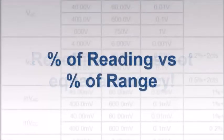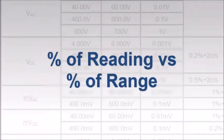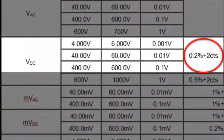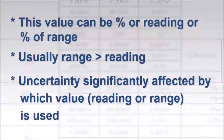A second factor in calculating uncertainty is expressed as a percentage. We recall our previous example specification of plus or minus 0.2% plus two counts. This indicates that the total uncertainty is two counts plus a percentage of a value. This can be a percentage of the reading or a percentage of the instrument's range. Uncertainty can be significantly affected by which of these values, reading or range, is used in the calculation, since the reading is generally much smaller than the range.